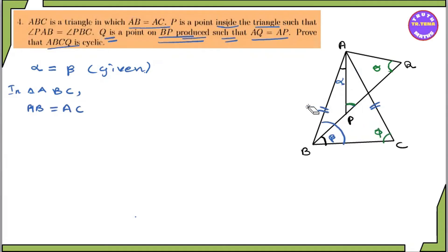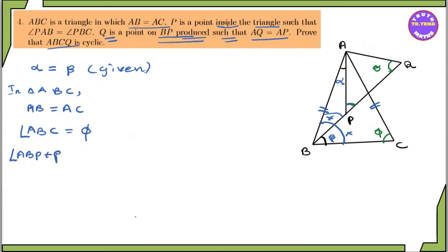Triangle ABC — the angle ABC is equal to angle ABC. Angle A, B, B, A, B — angle ABC.